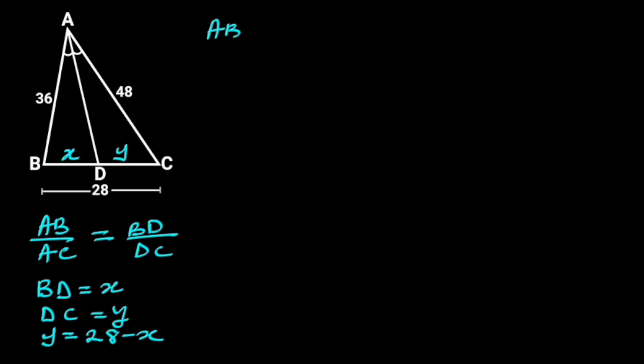AB is 36, and AC is 48. If we go ahead and plug in these values in the above equation, we will have 36 over 48 is equal to X over 28 minus X.